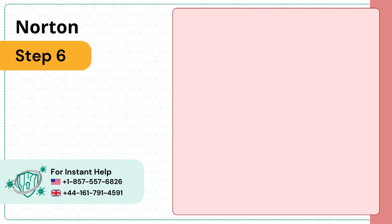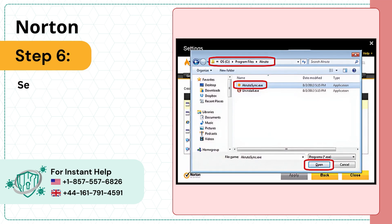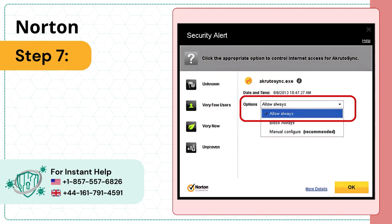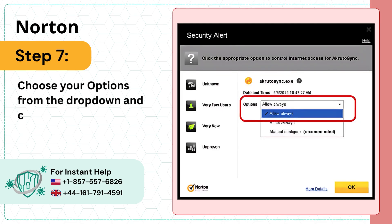Step 6: Select the program you want to add, then click Open. Step 7: Choose your options from the drop-down and click the OK button.